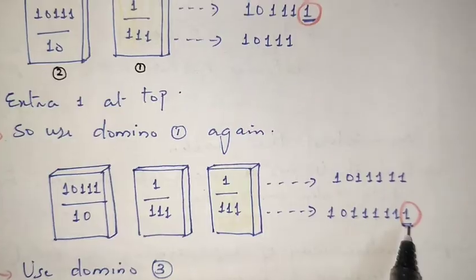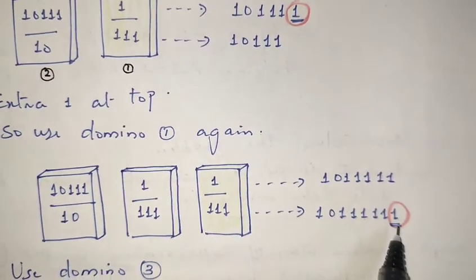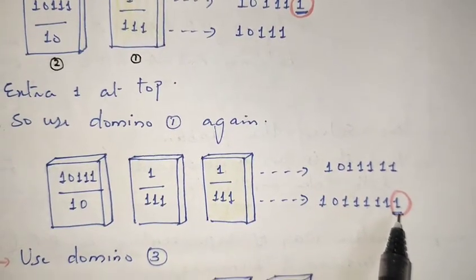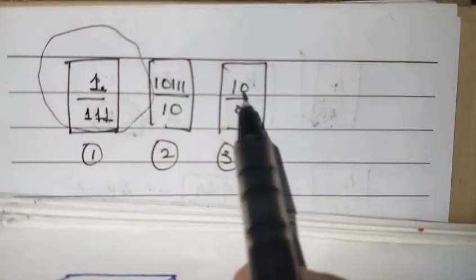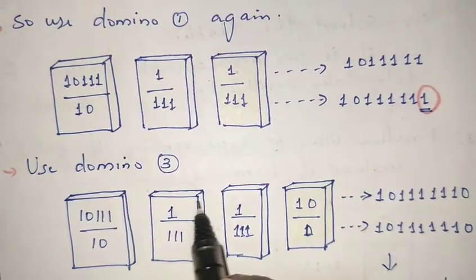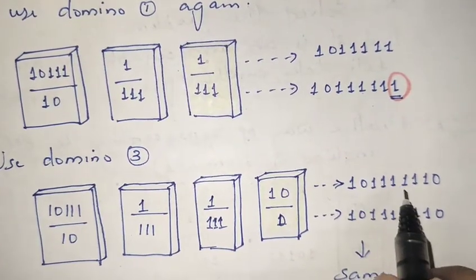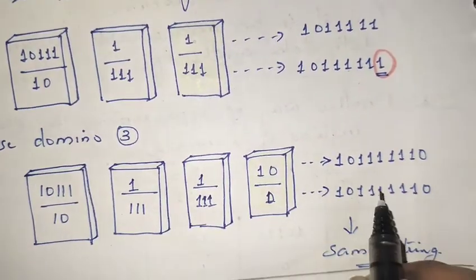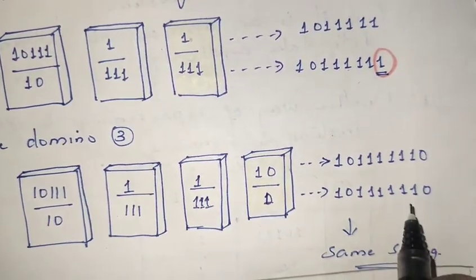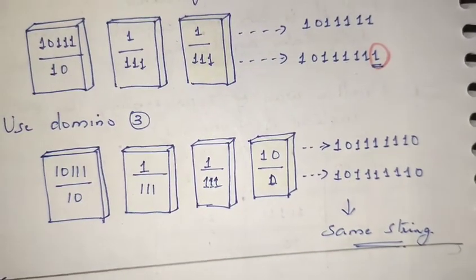Taking domino one again, the bottom part gets an extra '1', so I need a domino with '1' in the top. Taking that domino, I combine the numerator and denominator parts to get '10111110'. The denominator also gives '10111110'. The top and bottom are the same, so we found the solution for this example.